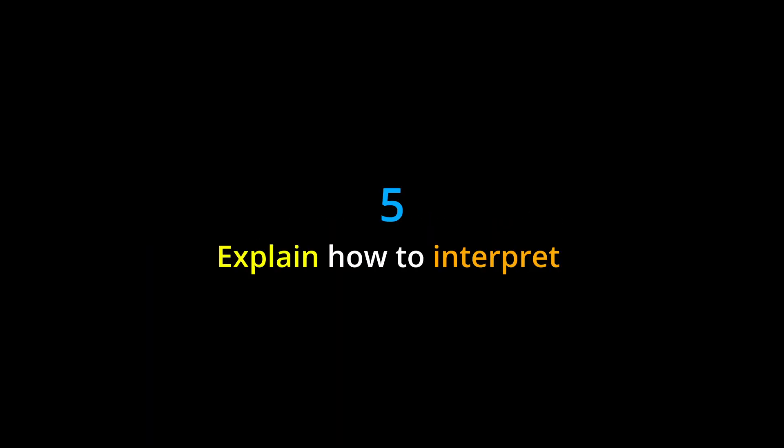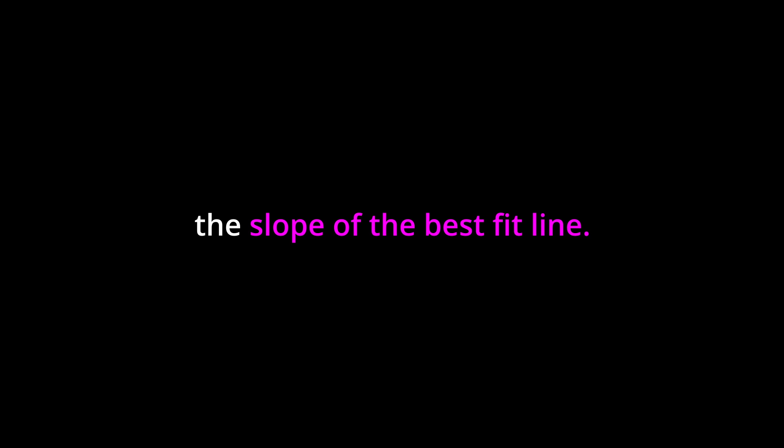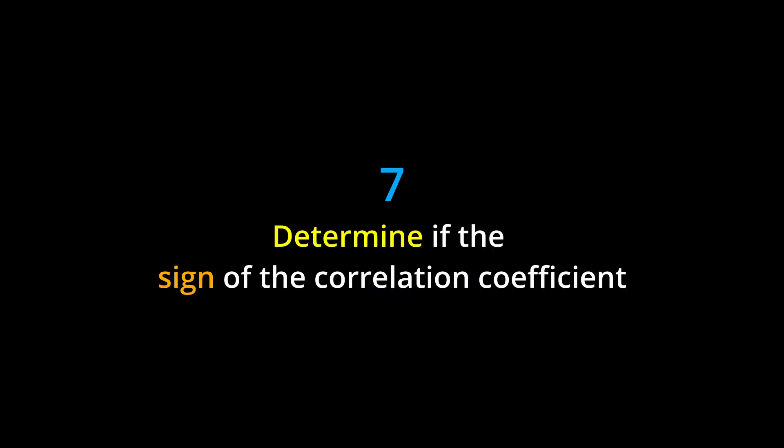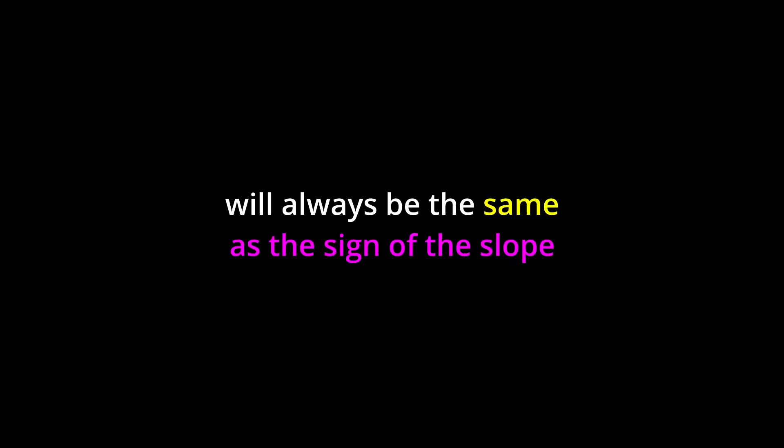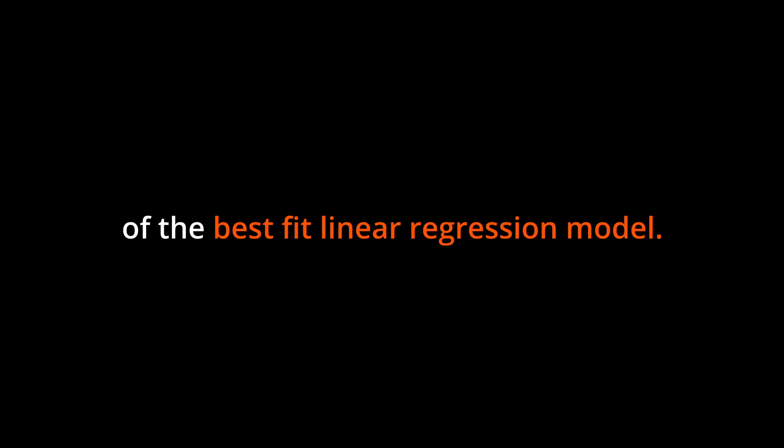5. Explain how to interpret the slope of the best-fit line. 6. Explain how to generate a prediction using a linear regression model. 7. Determine if the sign of the correlation coefficient will always be the same as the sign of the slope of the best-fit linear regression model.